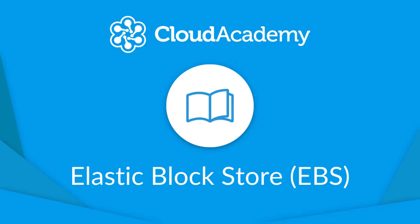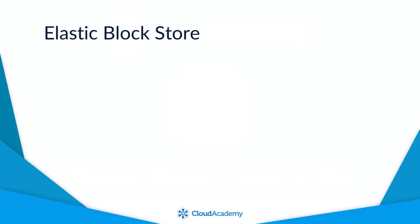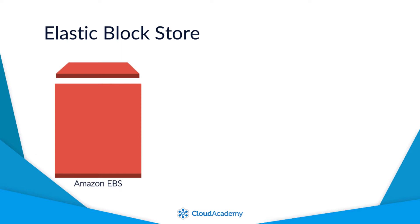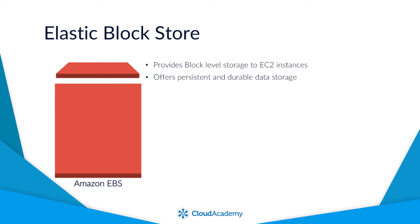Welcome to this lecture on EBS, which is another method of providing storage to your EC2 instances with different benefits to instance store volumes. Much like instance store volumes, EBS also provides block level storage to your EC2 instances. However, it also offers persistent and durable data storage, which offers far more flexibility for the data that you store on the EBS volume compared to instance store volumes.